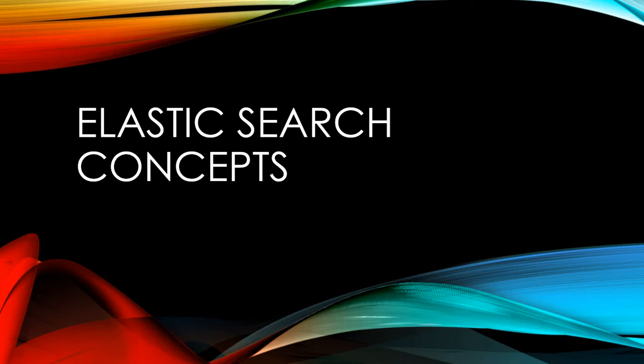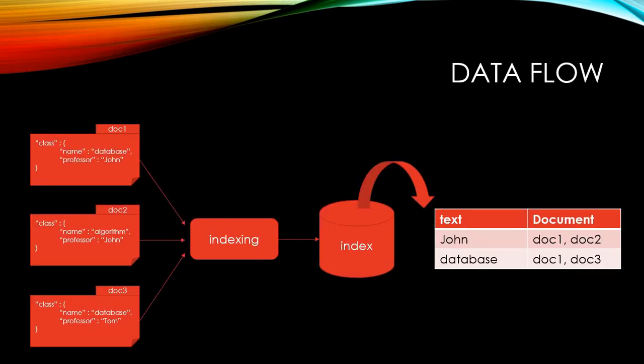Let's take a brief look at Elasticsearch concepts. First, we need to understand the data flow. Every time you insert documents in Elasticsearch, each text will be stored in an index and have information about where the text is from — like this example. You can find 'John' from doc1 and doc2, and you can also find the text 'database' from doc1 and doc3.